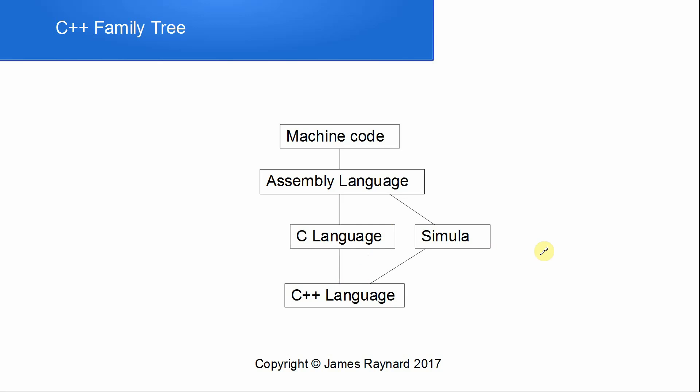So here is the C++ family tree: we start with machine code, then assembly language, then C as a high-level language, and Simula also as a high-level language, and they evolved into C++. C++ is at a higher level, though you can't really show the children in the same generation as the parents on the diagram.